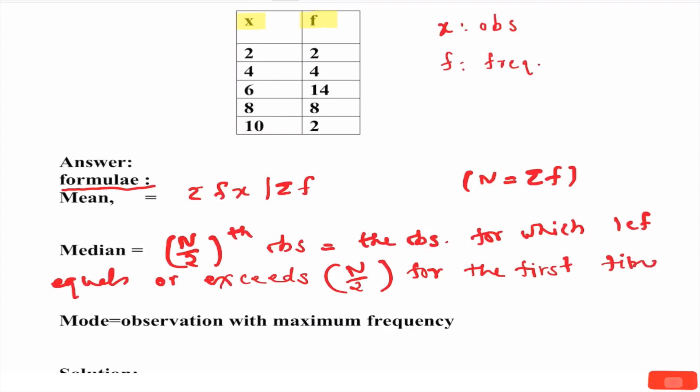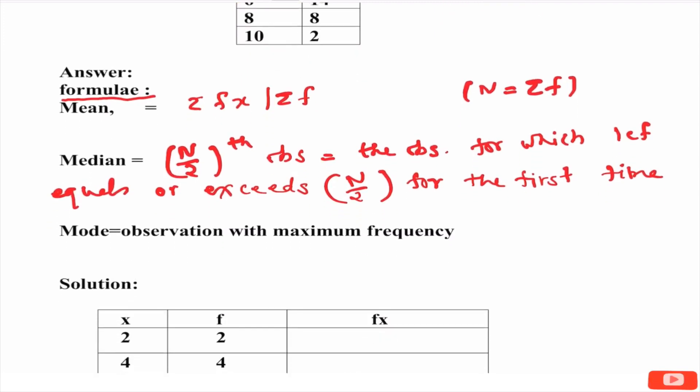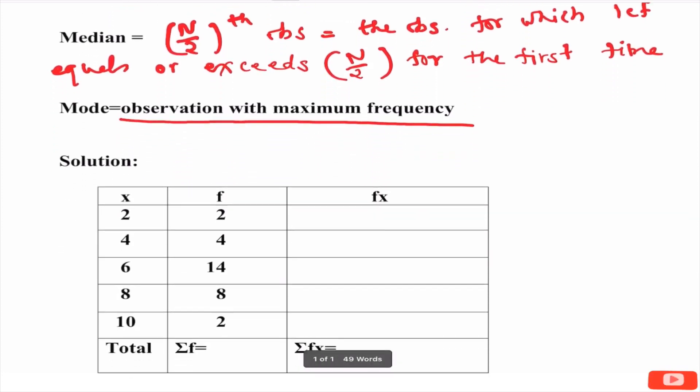Here we have to remember the observations are arranged in ascending order. Mode is the observation with maximum frequency. Now, let us find the answers.